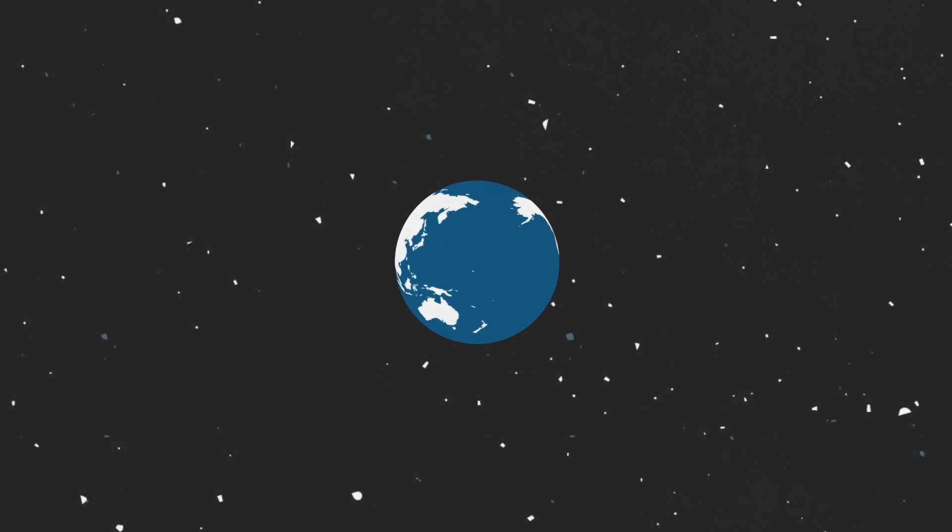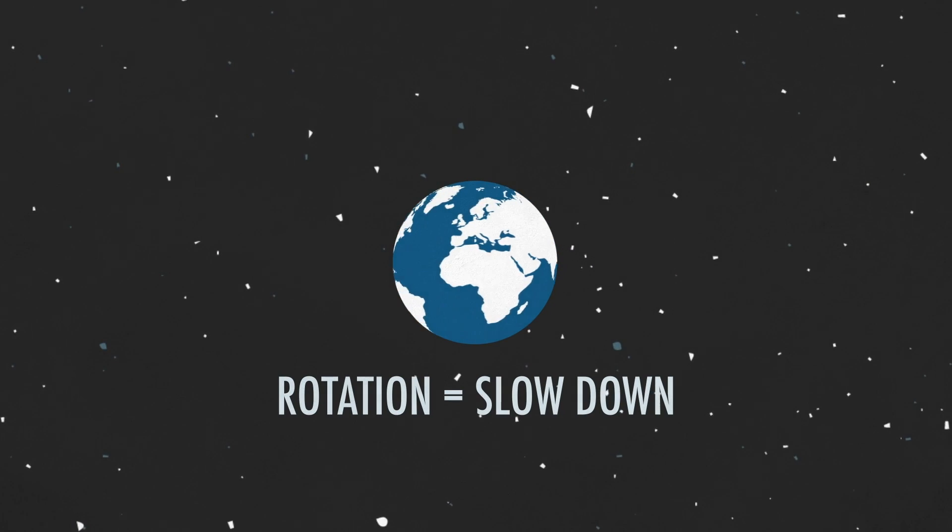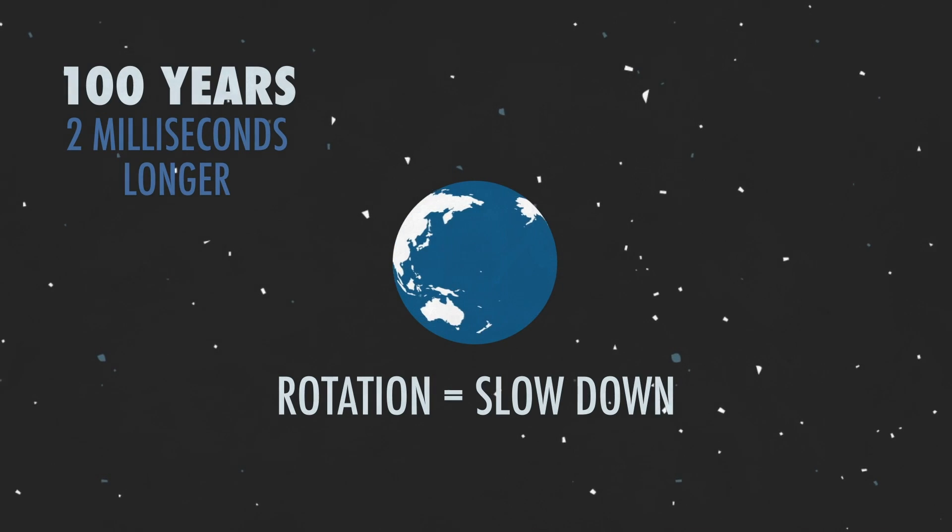As a result, measurements have shown that the Earth's rotation does seem to be slowing down, although at a miniscule rate, and in 100 years' time, one day then will be 2 milliseconds longer than today.